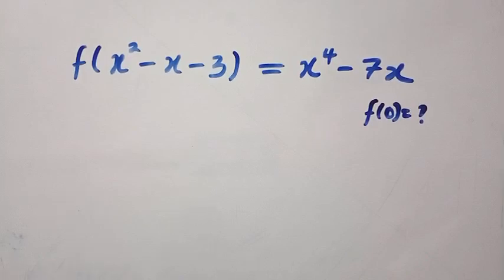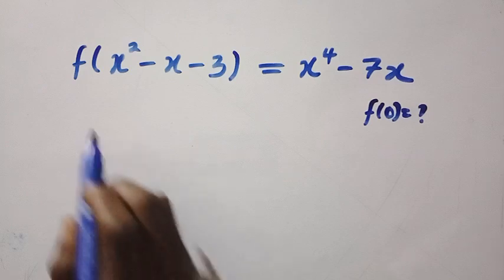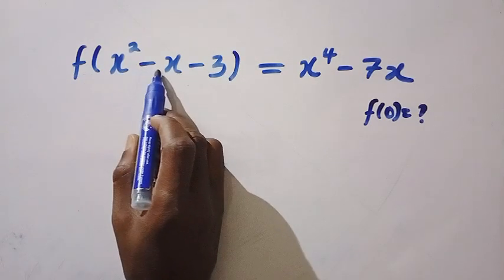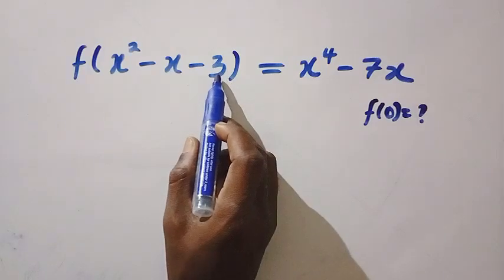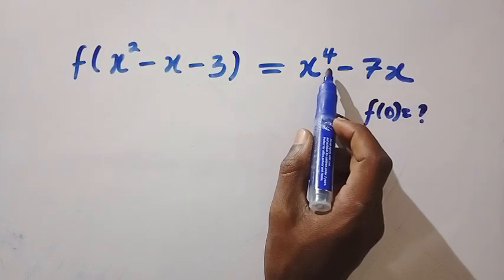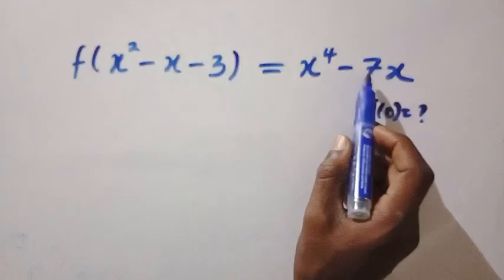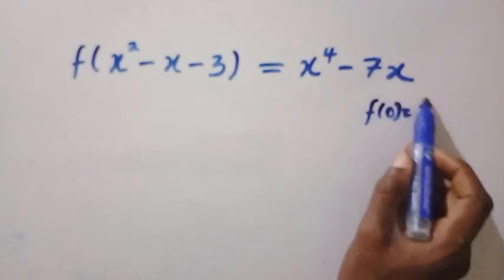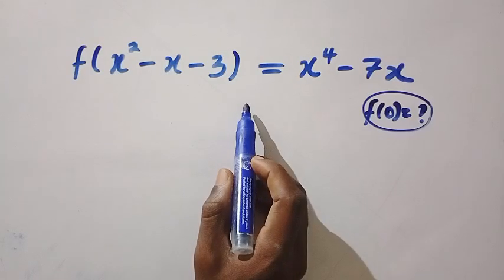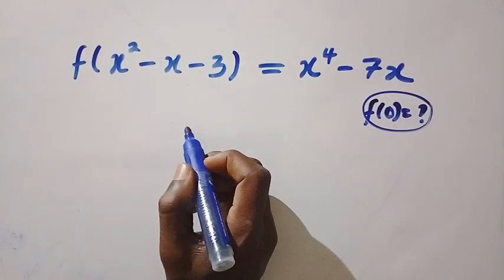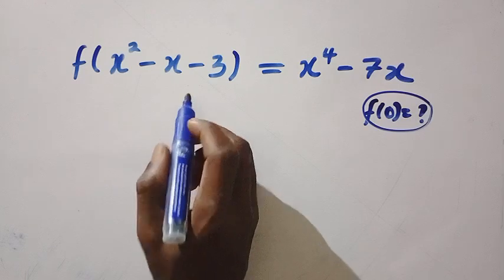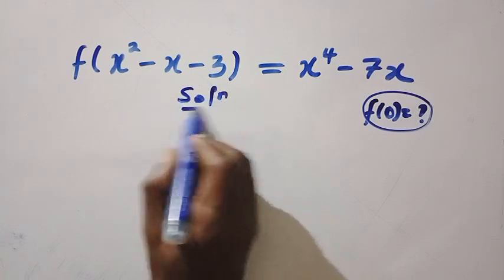Good day viewers, you are welcome. How to solve this nice functional equation? We have f of x squared minus x minus 3, which is the domain of this function, equals x to the power of 4 minus 7x. You are interested to get f of x given this function. I will be solving this question in two different ways. Let's consider the solution.